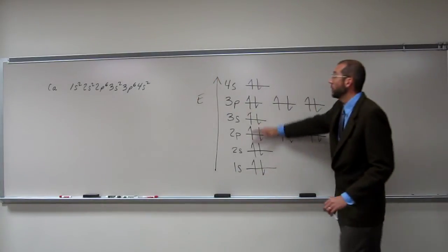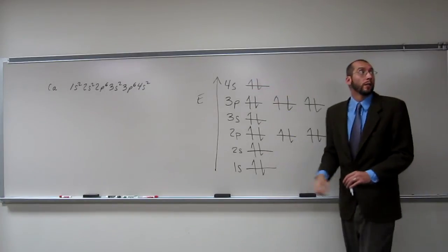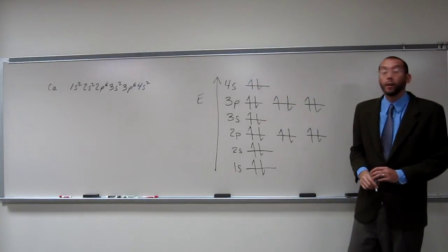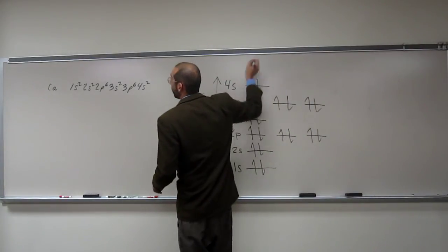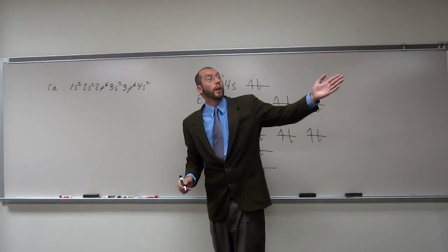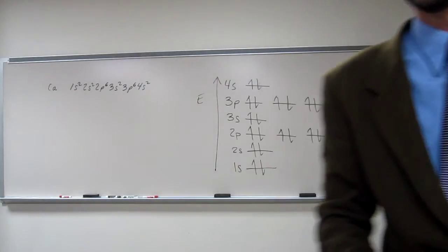Okay, so your orbitals will always be set up in the same way here. So the next one after the 4s would be the 3d, which would be starting with Sc up there and going all the way to Zn.